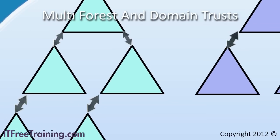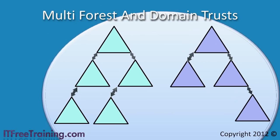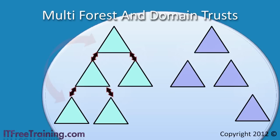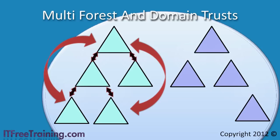To understand transitive trusts better, let's remove all the trusts and rebuild the relationships with non-transitive trusts. The parent domain wants to trust its child domains, so we would create two-way trusts like this. Now imagine that one of the child domains has two child domains of its own. In order for its children to trust the child domain, two trust relationships need to be created, so let's create two more two-way non-transitive trusts. Now the root domain wants to access the two new domains, so two more trusts need to be created. In order for the child domains to trust each other, two horizontal trusts need to be created like this.